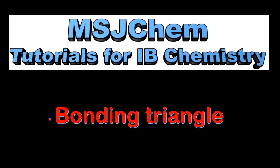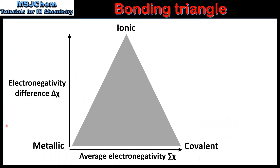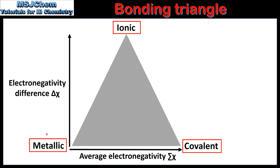This is MSJChem. In this video I'll be looking at the Bonding Triangle. We'll start by looking at a Simplified Bonding Triangle. This Bonding Triangle has a type of bonding at each vertex. The types of bonding are Metallic, Ionic, and Covalent.